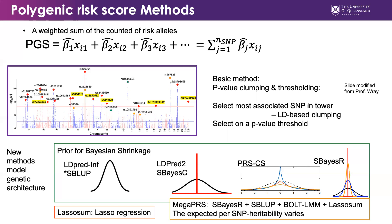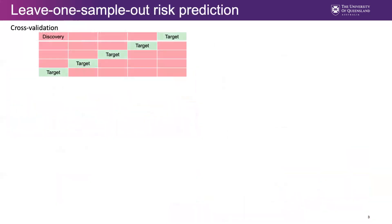In this talk, we will compare all those methods. We know that when a method is proposed, they already compare it with other methods. But the fundamental question we are trying to answer here is which method should we use in the PGC data. We use cross-cohort validation to answer this question and to compare the performance of different methods.